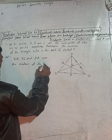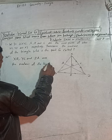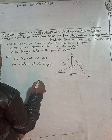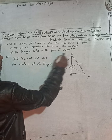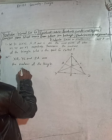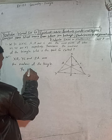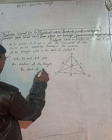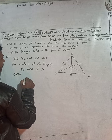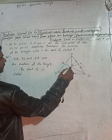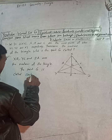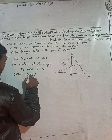The medians of the triangle — and what is the point Z called? The point Z is called the centroid.